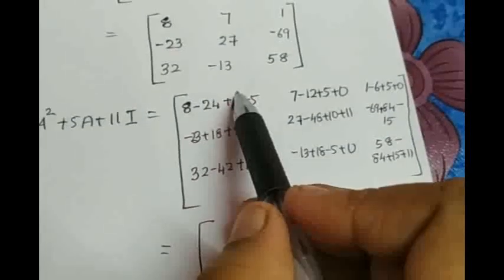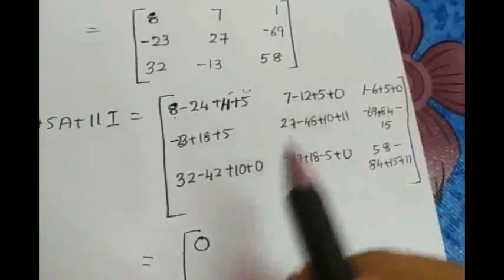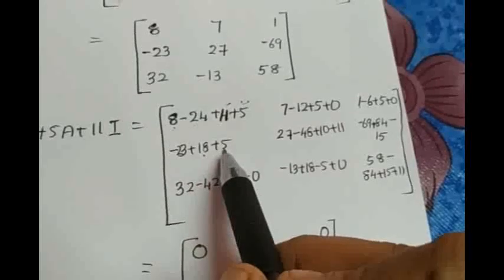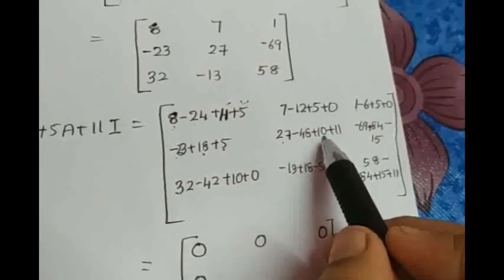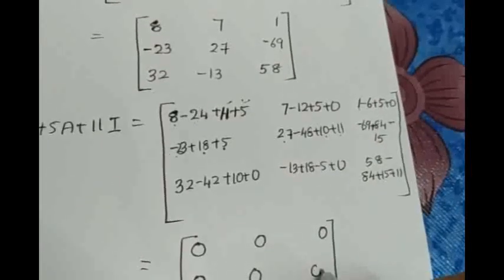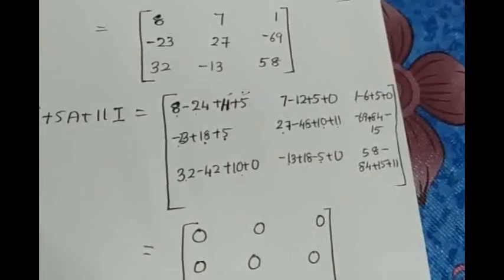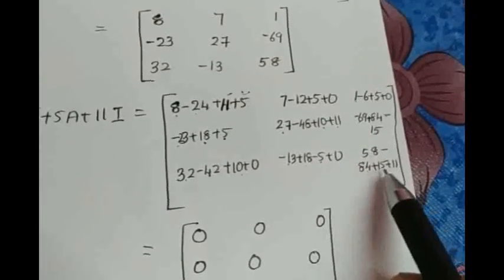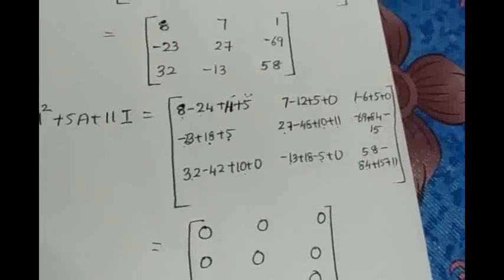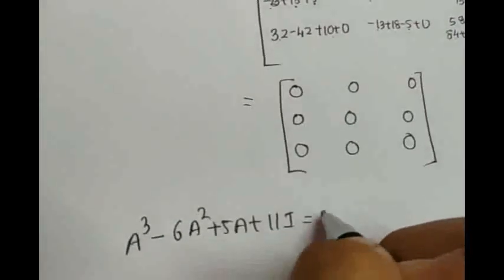Summing each: 11 plus 5 is 16, plus 8 is 24, minus 24 is 0. 7 plus 5 is 12, minus 12 is 0. 5 plus 1 is 6, minus 6 is 0. 18 plus 5 is 23, minus 23 is 0. 27 plus 10 is 37, plus 11 is 48, minus 48 is 0. Minus 15 minus 16 minus 84 plus 84 is 0. 32 plus 10 is 42, minus 42 is 0. Minus 13 minus 5 is minus 18, plus 18 is 0. 58 plus 15 plus 11 is 84, minus 84 is 0. So we are getting the zero matrix. Thus, A cube minus 6A square plus 5A plus 11I equals 0. First part proved.